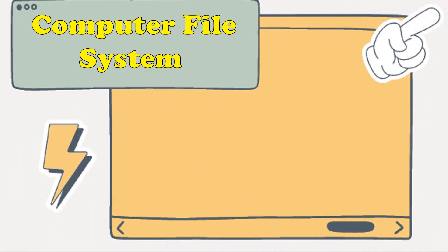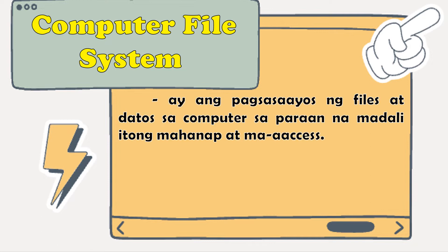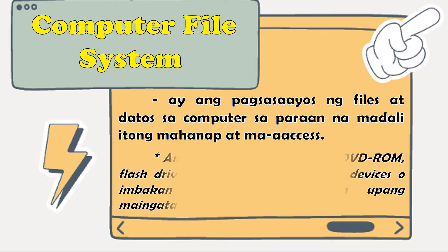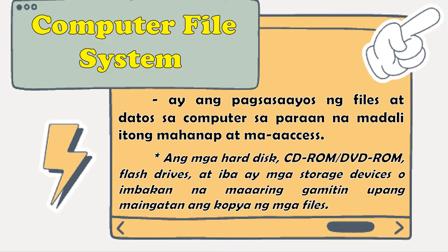Computer File System. Ito ay ang pagsasayos ng files at datos sa computer sa paraan na madali itong mahanap at ma-access. Ang mga hard disk, CD-ROM or DVD-ROM, Flash Drives at iba pa ay mga storage devices o imbakan na maaaring gamitin upang maingatan ang kopya ng mga files.